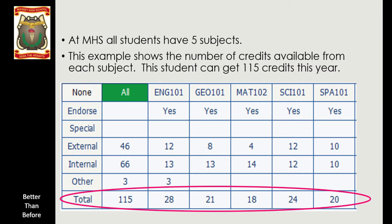At Level 1, students have to do English, maths and science. The science can be replaced by geography. And then there are two option subjects within that structure.